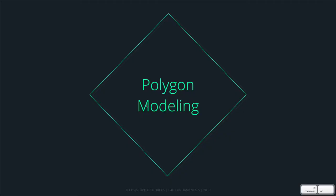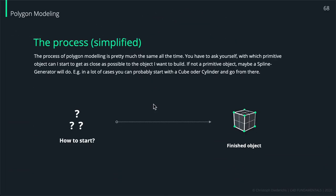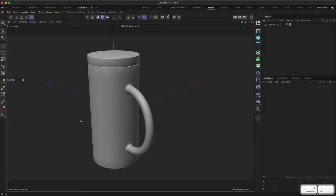Let's cover just one more basic thing - the mental model or general approach towards modeling something out of polygons. The process in simplified terms means that at the start of every modeling project you ask yourself: what kind of primitive or parametric object can I use to get as close as possible to the target object? Later on we'll also learn that we can create our own primitive objects using spline generators, but for now let's focus on the parametric objects available in Cinema 4D.